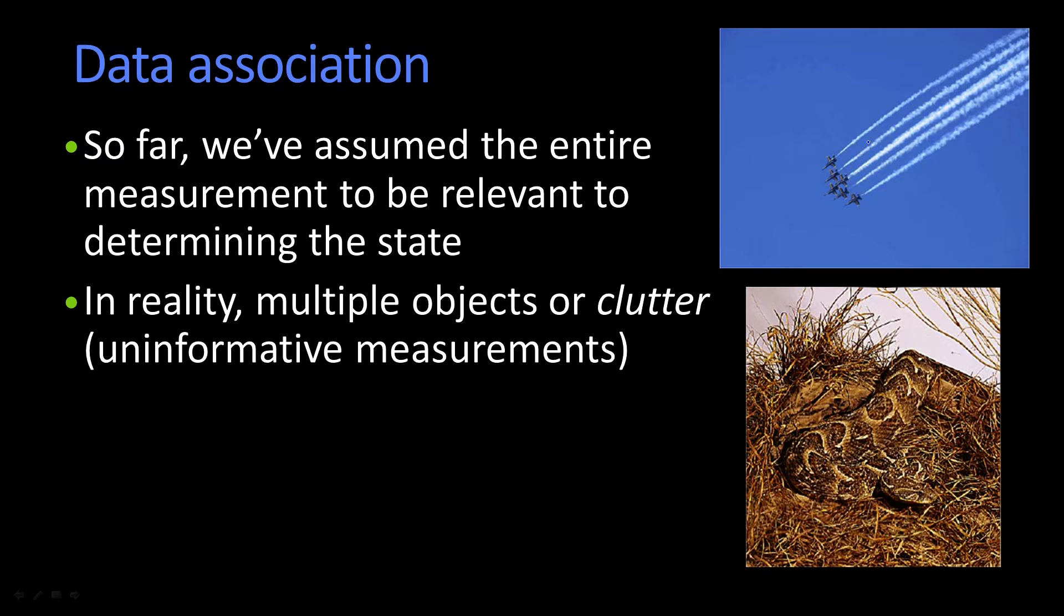Or there can be what's known as clutter. Clutter means there's a lot of stuff in the environment that has nothing to do with me. By the way, the clutter is the basis of camouflage. So when you take a look at this rattlesnake whose contour you can just barely see here, there's all this other stuff that has nothing to do with it being a snake. So it confuses your visual system.